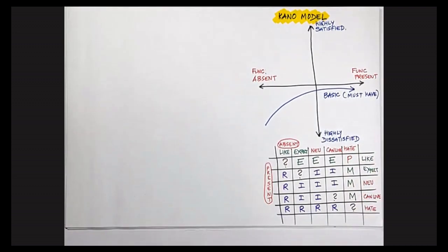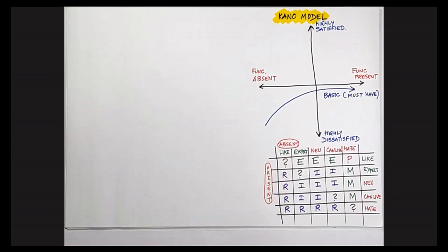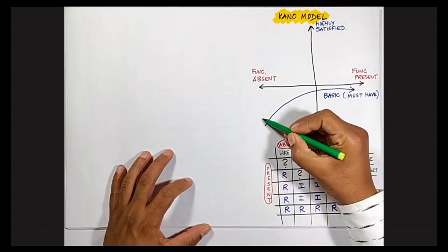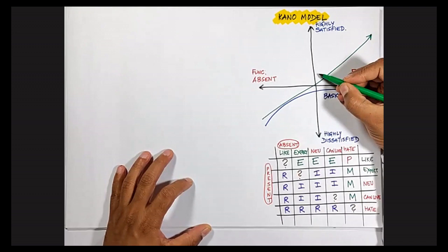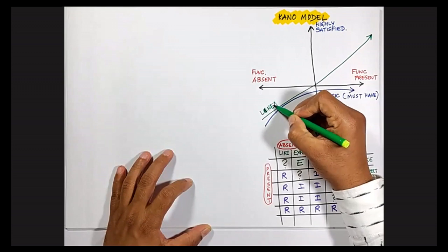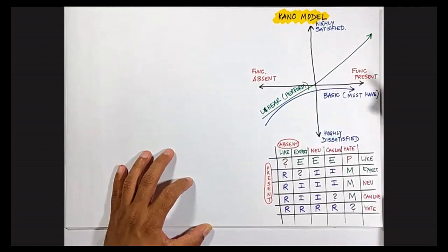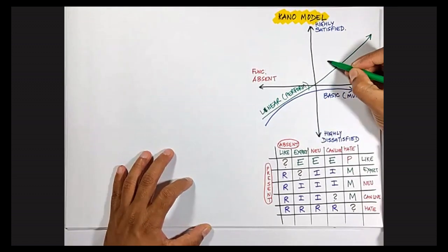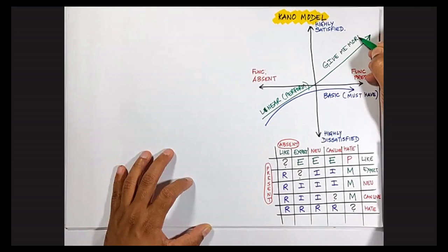All those categories of functionalities that come under this line are basic functionalities. The next category is called performance, or the linear category. In this, the more you give to the customer, the more they like it. The customer feels like 'I want more' or 'give me more' — this is the give-me-more category.